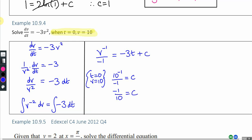Now I've got the value of c I can write down the particular solution. I'm going to tidy this up. I don't like the denominator of minus 1, so I'm going to write it as minus v to the power minus 1 equals minus 3t. And then our c value is also negative, so minus 1 over 10.